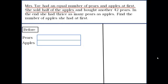She sold half of the apples. To show that, we divide the apple into two equal parts and remove one part. So now she is left with half of the apples that she had at first and bought another 42 pears. So we can show this by extending the number of pears by 42. Now in the end, she had thrice as many pears as apples.